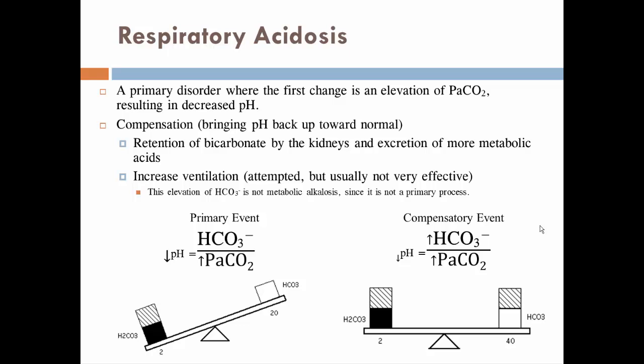Someone with respiratory acidosis — like a COPD patient — may attempt to increase ventilation by breathing harder to compensate. But you can't fix a respiratory problem with a respiratory solution, so this attempt is usually not very effective.